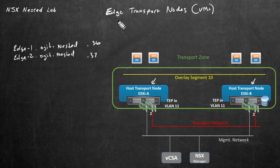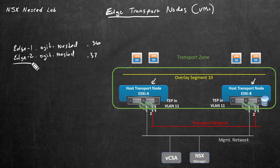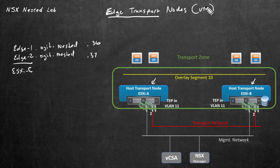These edge transport nodes are implemented as completely separate VMs, as opposed to host transport nodes which are ESXi hosts where we've enabled NSX support. As a general rule, I want to avoid placing an edge transport node VM on a host transport node — even though it could support it, I want to separate them out. So let's place these two edge nodes on ESXiC, reinforcing the idea that edge node VMs shouldn't run on the same ESXi hosts acting as host transport nodes.